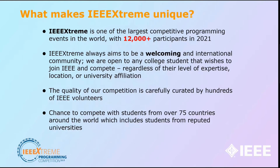So remember I said it's a bit more than a programming competition — let's see what makes it unique. IEEE Xtreme is one of the largest competitive programming events in the whole world, with over 12,000 participants in 2021. It always aims to be welcoming to an international community, open to any college student that wishes to join IEEE and go for programming and coding regardless of their level of expertise — beginner, intermediate, or advanced. You can compete with students from over 75 countries around the world, including like-minded coders from reputed universities.